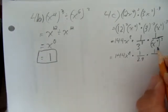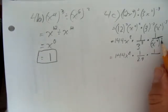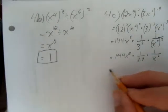So I get 144x to the power of 8 times 1 over 27 times 1 over x squared to the power of 3, multiply the exponents and I get x6.